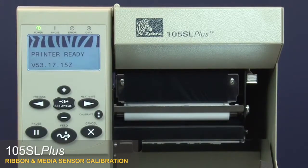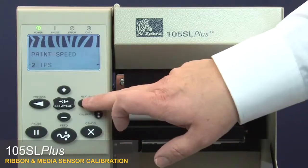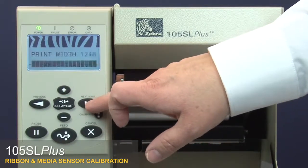105SL Plus ribbon and media sensor calibration. Press setup. Press next to go to the media and ribbon calibrate menu option.